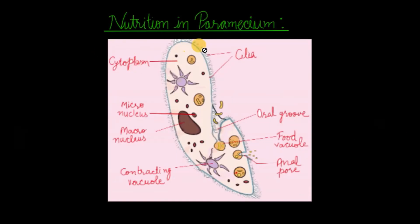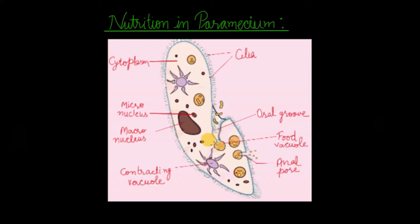Let's have a look at nutrition in paramecium. Paramecium is a single-celled organism with small hair-like growths over its entire body known as cilia. All these cilia beat and cause movements so as to propel the food particles towards the oral groove of the paramecium. When food particles enter the oral groove and reach its base, these food particles are engulfed and a food vacuole is formed.